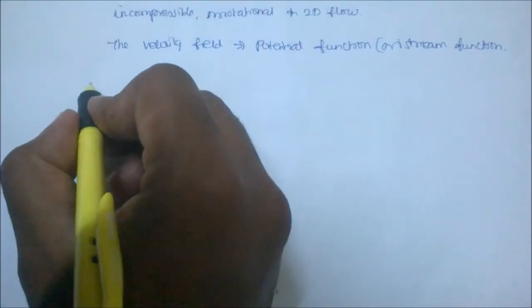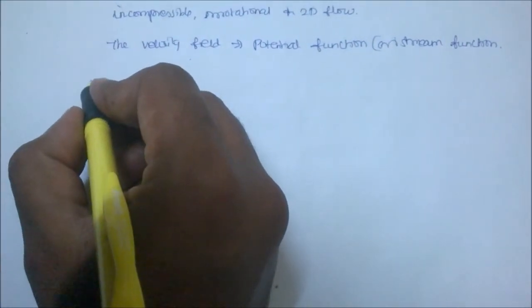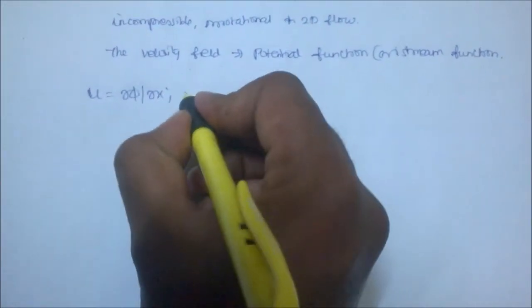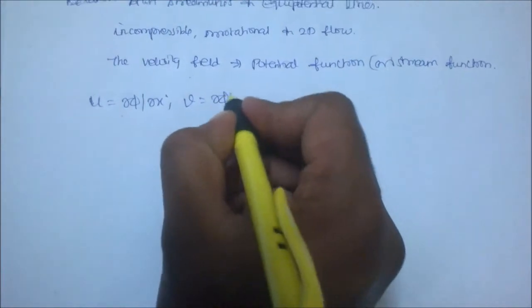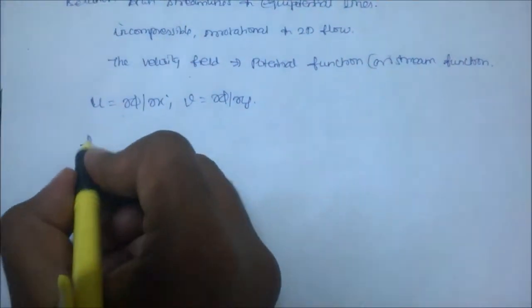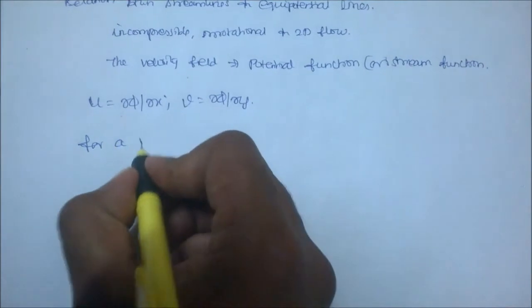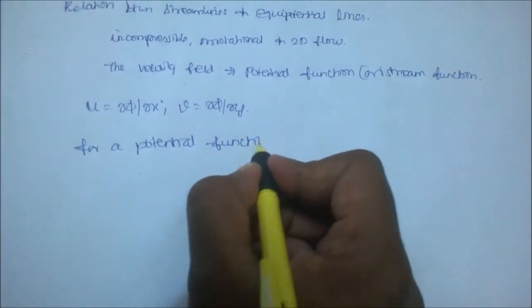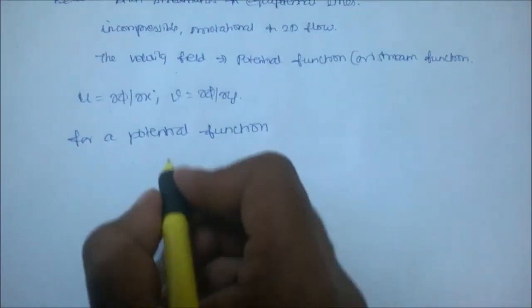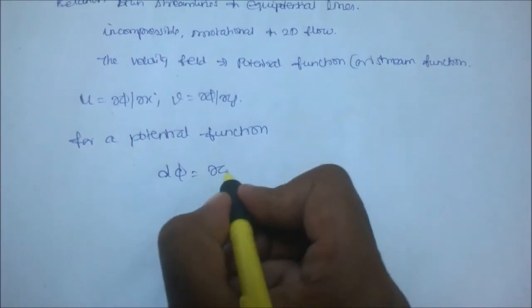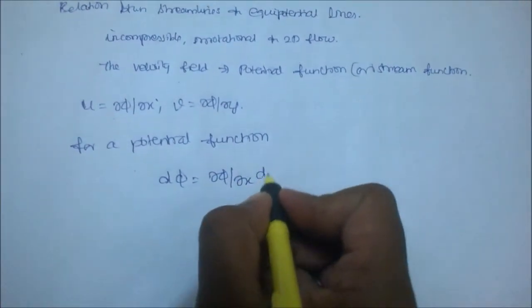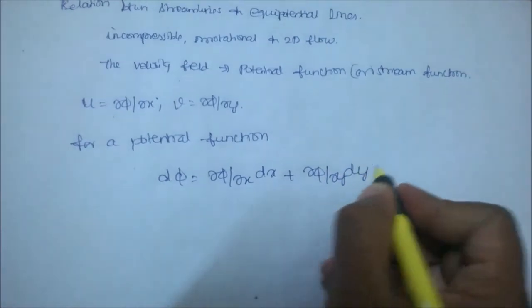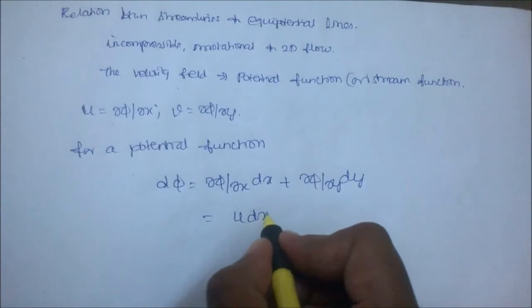Using the potential function in Cartesian coordinates, velocity component u can be written as ∂φ/∂x, and v can be written as ∂φ/∂y. For a potential function, dφ equals ∂φ/∂x dx plus ∂φ/∂y dy, which equals u dx plus v dy.